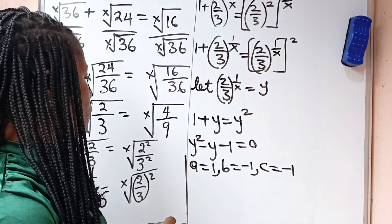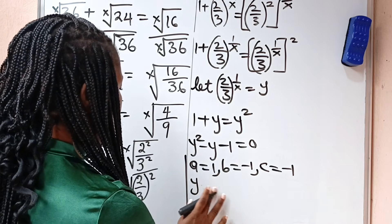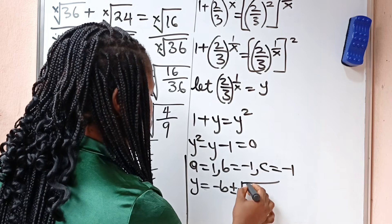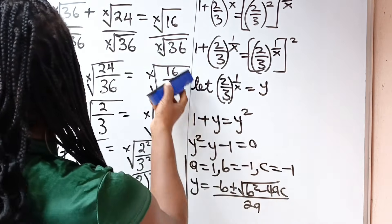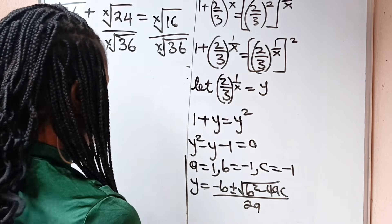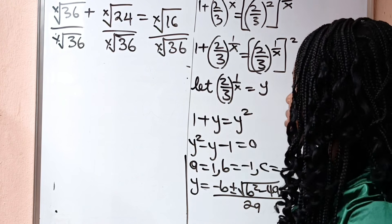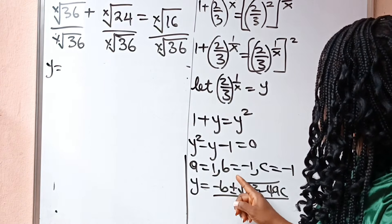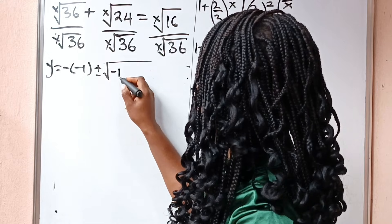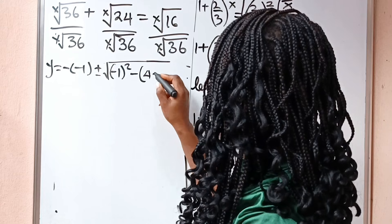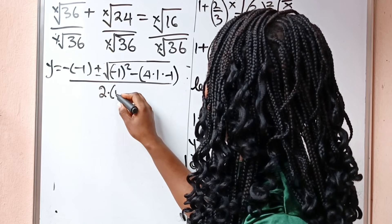Now we are going to solve this using the quadratic formula, which states that y is equal to minus b plus or minus square root of b squared minus 4ac, everything divided by 2a. Recall that a is 1, b is minus 1, and c is minus 1. So we are going to have y is equal to minus bracket minus 1, plus or minus square root of minus 1 squared minus 4 multiplied by 1 multiplied by minus 1, everything divided by 2 multiplied by 1.